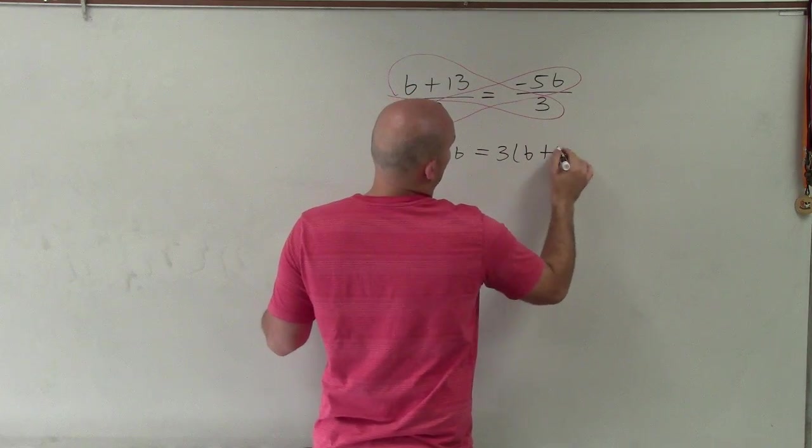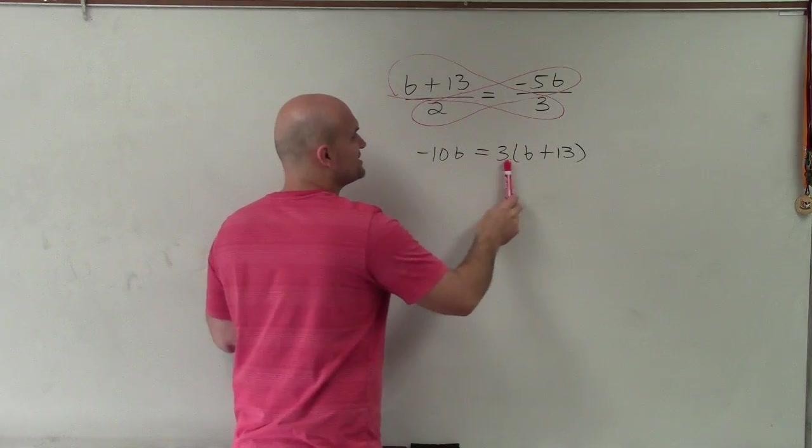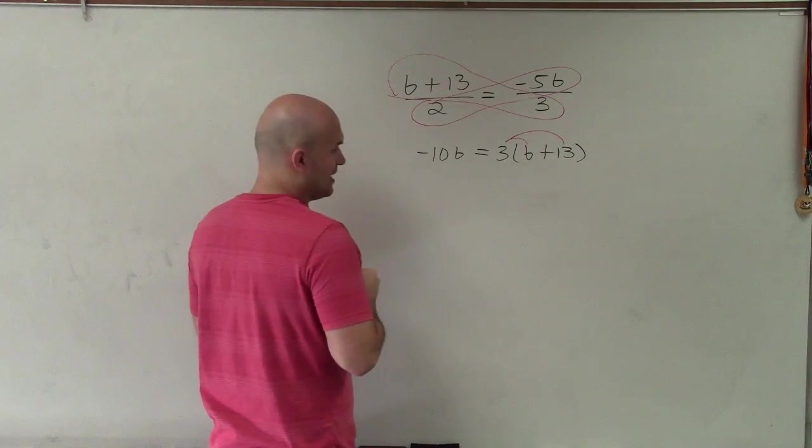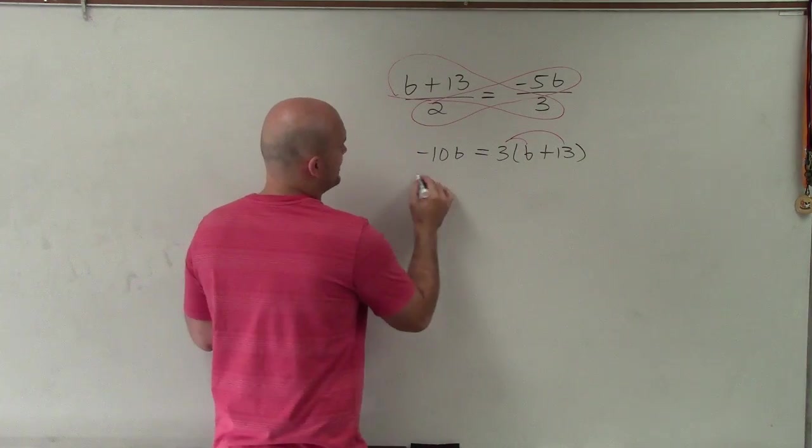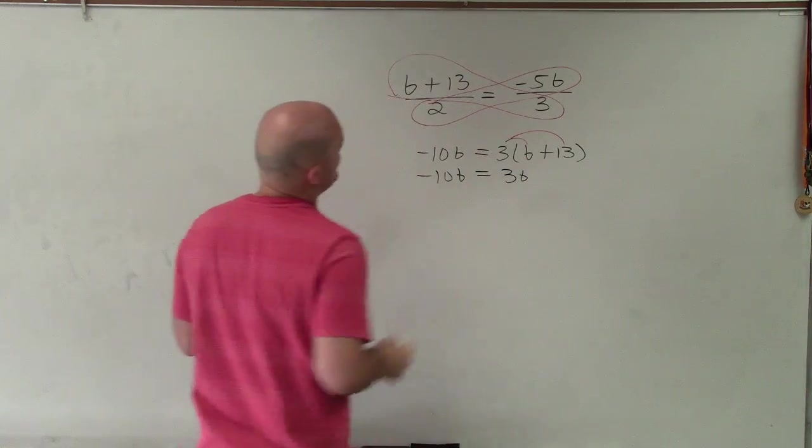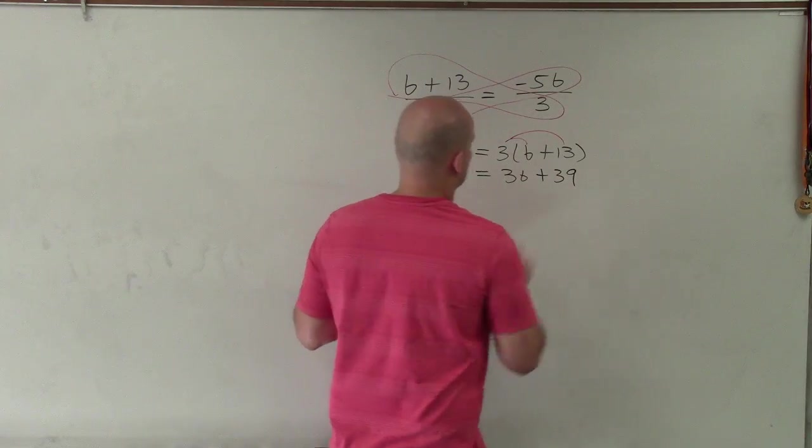I'm going to rewrite that out because it's very common to make mistakes - it's 3 times that whole expression. So I have to apply distributive property when finding the product. So it's negative 10b equals 3b, and 3 times 13, well 13 times 2 would be 26, so it'd be 39 plus 39.